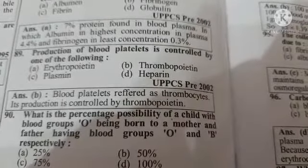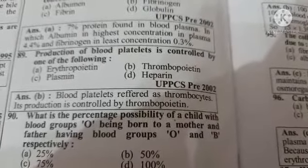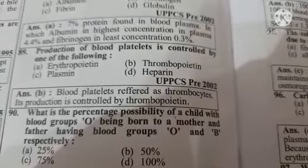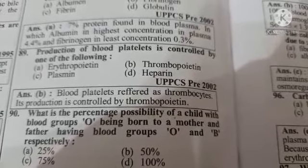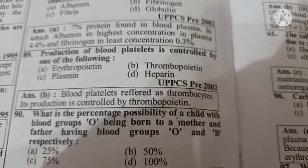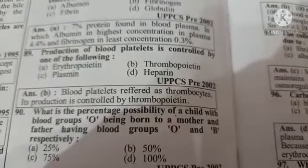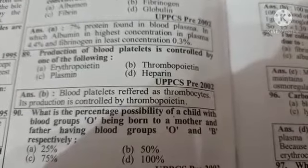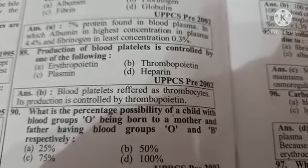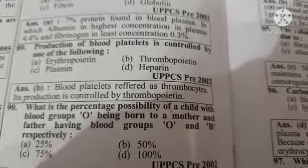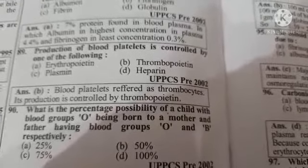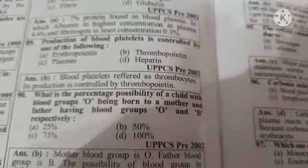Next question: what is the percentage possibility of a child with blood group O being born to a mother and father having blood groups O and B respectively? Option A: 25%, Option B: 50%, Option C: 75%, Option D: 100%. The correct answer is Option B: 50%.